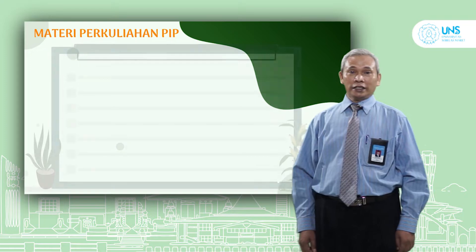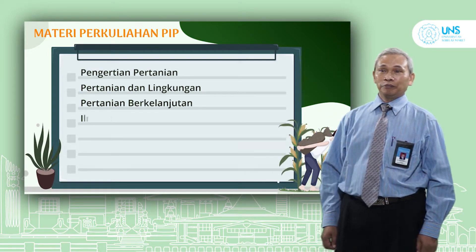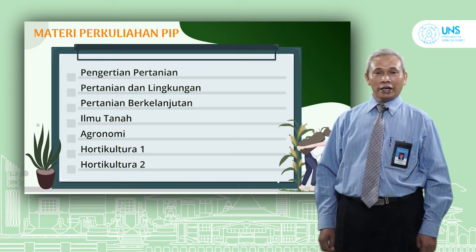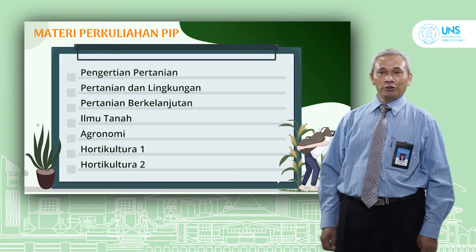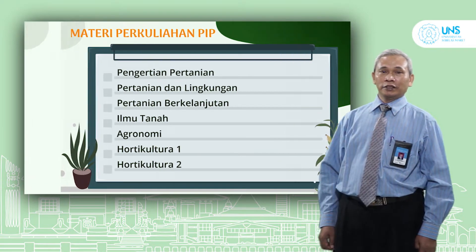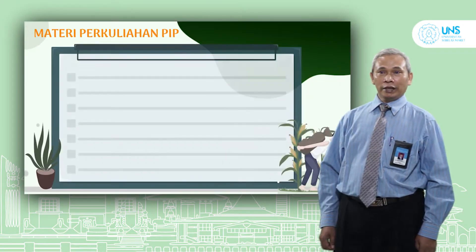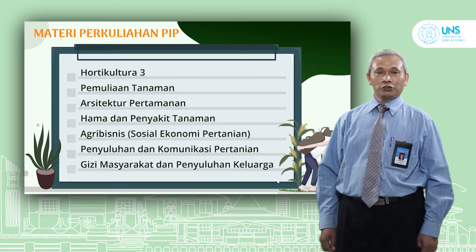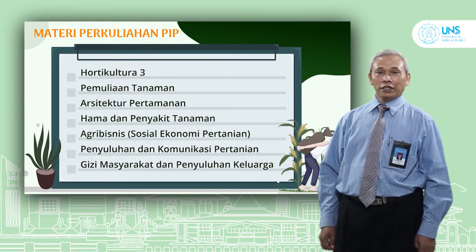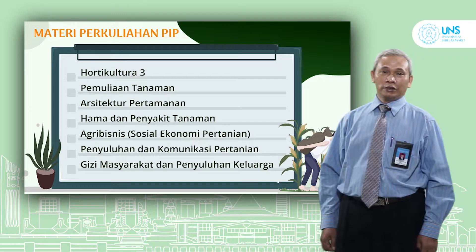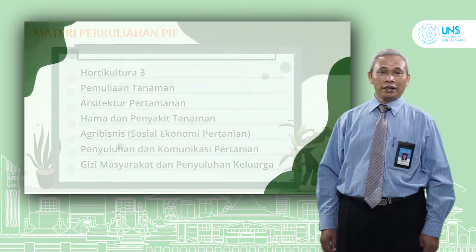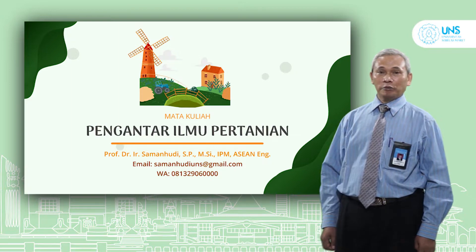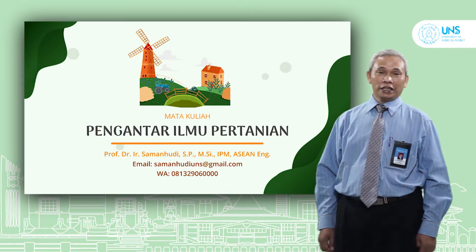Ada beberapa tema yang nanti akan kita pelajari. Yang pertama adalah pengertian pertanian, kemudian pertanian dan lingkungan, pertanian berkelanjutan, ilmu tanah, agronomi, hortikultura, pemulihaan tanaman, arsitektur pertamanan, hama dan penyakit tanaman, agribisnis atau sosial ekonomi pertanian, kemudian penyuluhan dan komunikasi pertanian serta gizi masyarakat dan sumber daya keluarga. Beberapa tema ini merupakan bagian dari mata kuliah Pengantar Ilmu Pertanian yang akan kita pelajari selama satu semester ke depan.